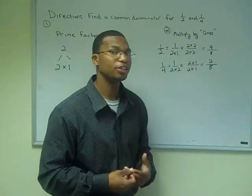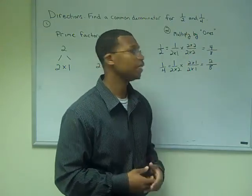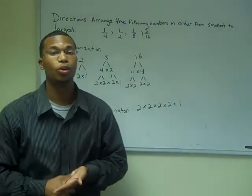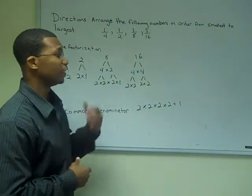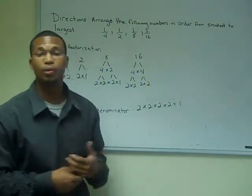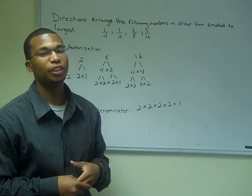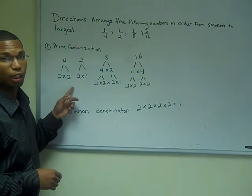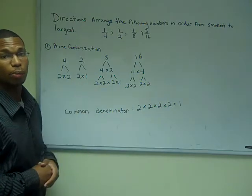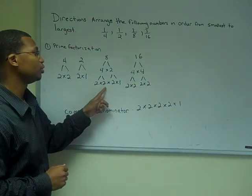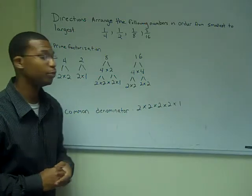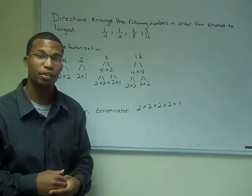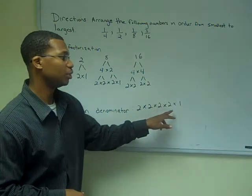Now that the denominators are the same, we can compare them, and we can easily see that 4 eighths is greater than 2 eighths. Our directions say to arrange the following fractions from smallest to largest: 1 fourth, 1 half, 1 eighth, and 3 sixteenths. Step one: find the prime factorization of all the denominators. Prime factorization of 4 is 2×2; of 2 is 2×1; of 8 is 2×2×2×1; and of 16 is 2×2×2×2. Thus our common denominator is 2 times 2 times 2 times 2 times 1.